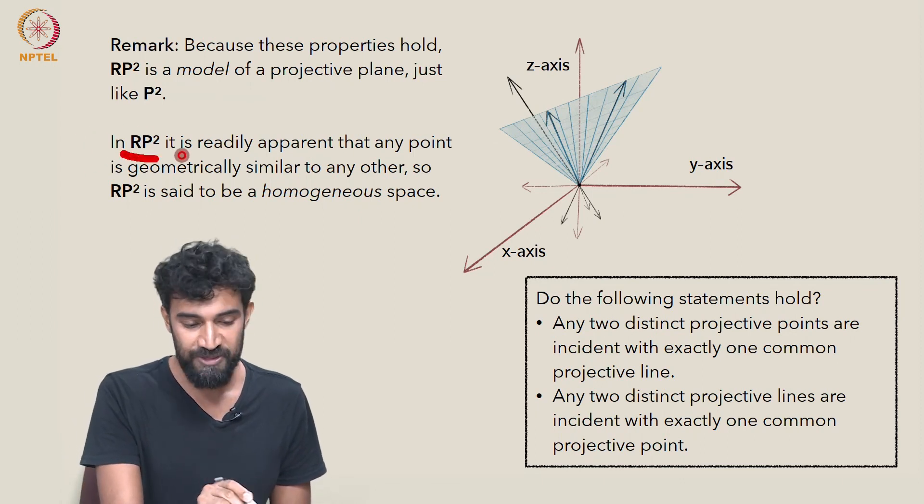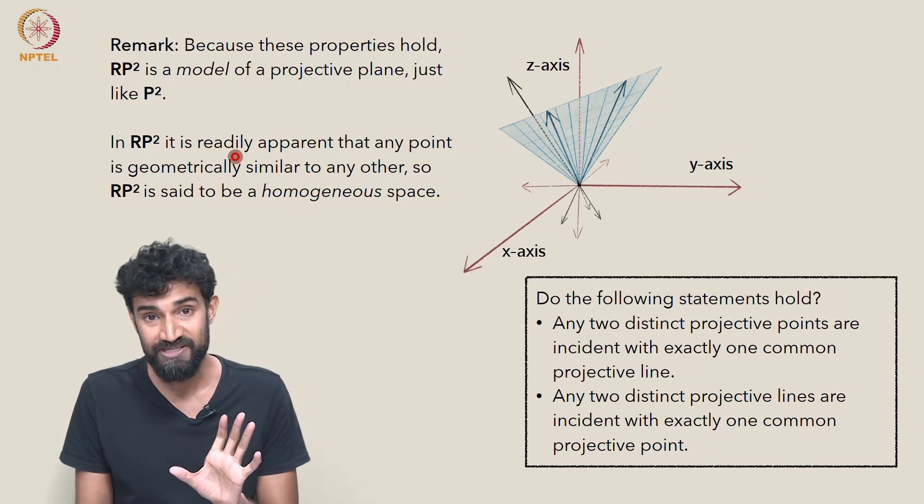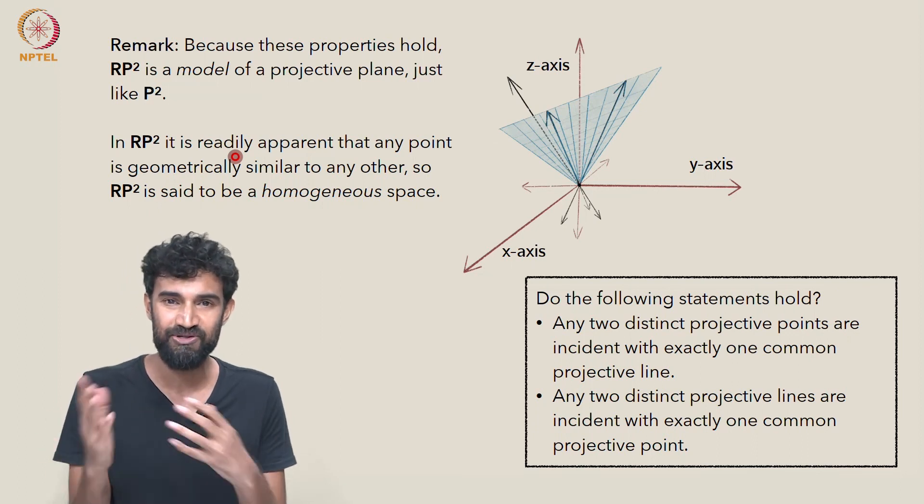And in RP², we already see one advantage, which is that it's immediately apparent that any point, any projective point, is geometrically similar to any other, indistinguishable from any other.